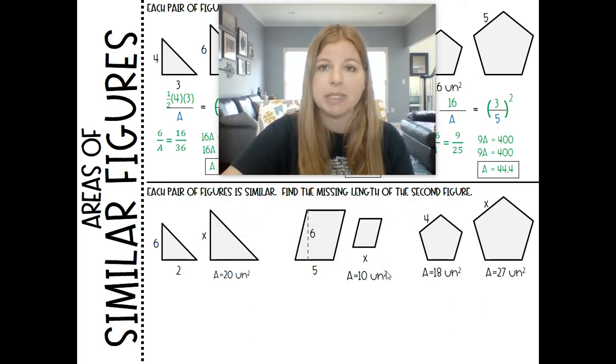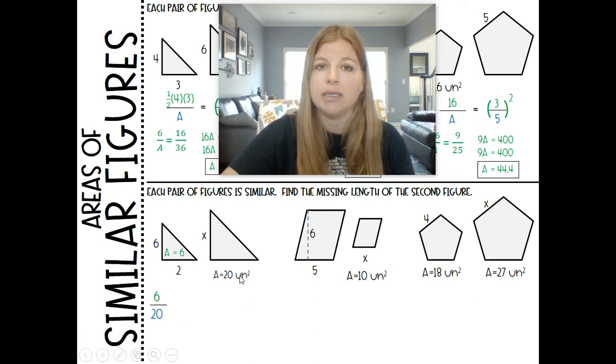Last three problems, but instead of finding the area, we're solving for a missing length. So area of my first triangle here is 6. I'm going to save us the 1 half base times height. We're just going to do the math. So 6 times 2 is 12. Half of 12 is 6.